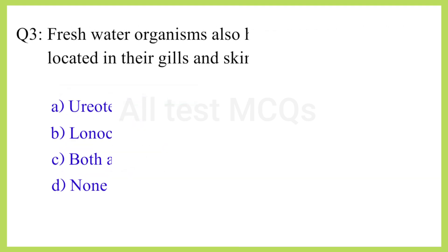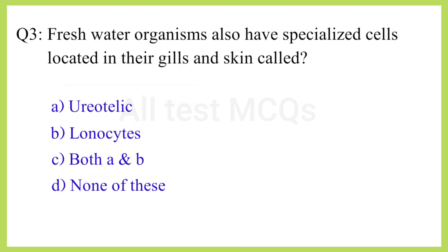Q3. Fresh water organisms also have specialized cells located in their gills and skin called? The correct answer is option B: Ionocytes.